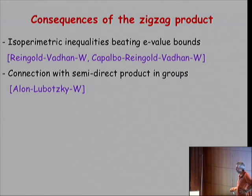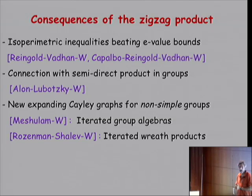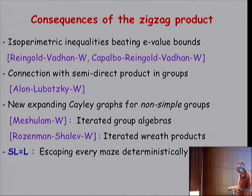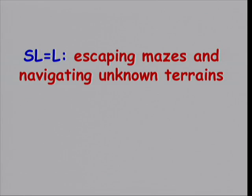It's a peculiar thing that we were trying to get out of algebra and couldn't. It turns out this construction is very intimately connected to algebra — to semi-direct products in groups. We explored this connection, and with it we were able to prove expansion for groups very far from simple groups, for which there are no other tools. The most fantastic consequence is the result SL equals L, which Russell mentioned yesterday. And very recently, the superexpanders of Manor Mendel use ZigZag, as do monotone expanders.